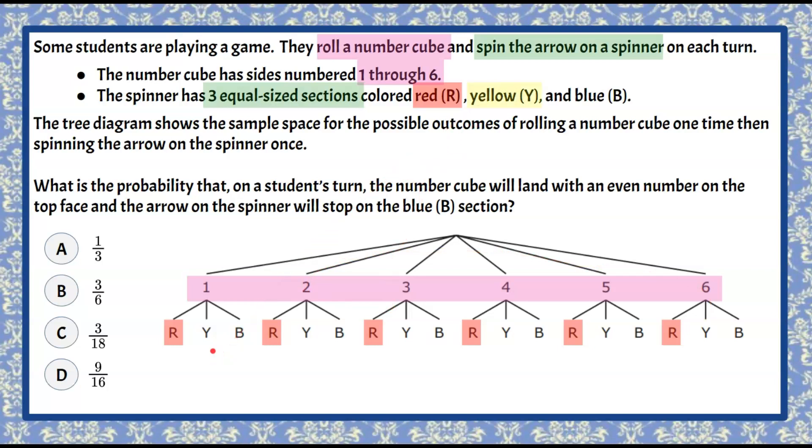Now we have yellow and that's represented in our tree diagram and we can see that we have six different opportunities given our first roll of the die. And then we have our blue sections also on the tree diagram down here with B.